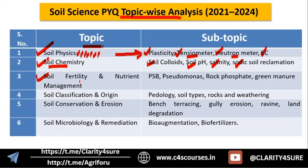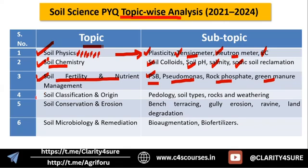The third important heading is soil fertility and nutrient management. NPK — nitrogen, phosphorus, and potassium — their sources and the major fertilizers we use in different soils are important. Questions were on phosphorus solubilizing bacteria, Pseudomonas species (related to phosphorus), rock phosphate, and concepts of green manure including in-situ green manure, called green manure, ex-situ, and different crops used for green manuring.